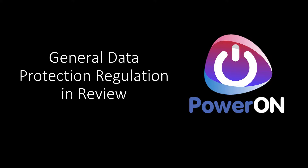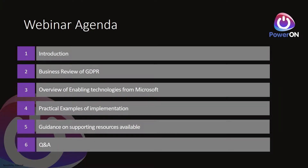As an agenda for today: I'll give a quick introduction to who I am and who PowerOn are. We'll then do a business review of GDPR, looking at the key requirements and cutting through some of the jargon. Then we'll look at some enabling technologies from Microsoft at a high level, focusing on practical examples where you can use technologies to address broader risks — things that are quick to get started so you can de-risk yourself as quickly as possible while you build a fuller GDPR plan. We'll also share supporting resources, and there'll be a Q&A at the end.